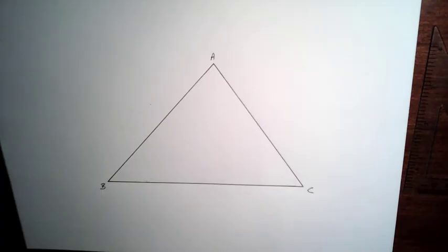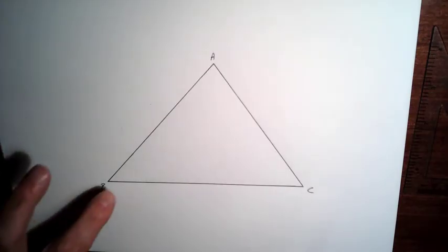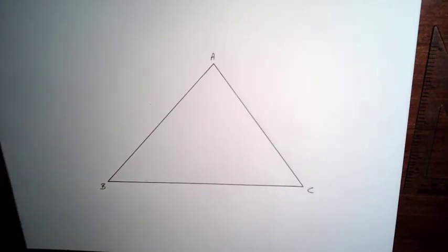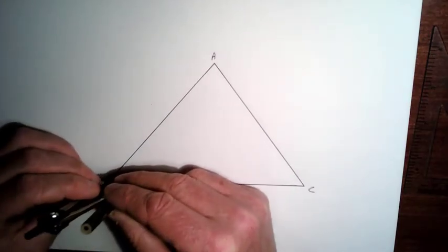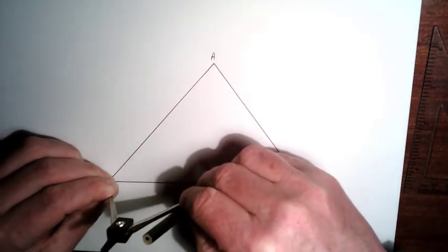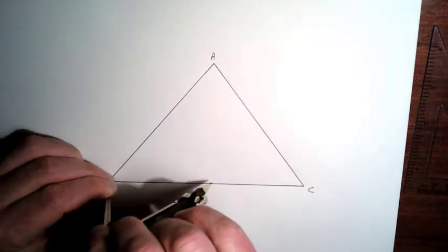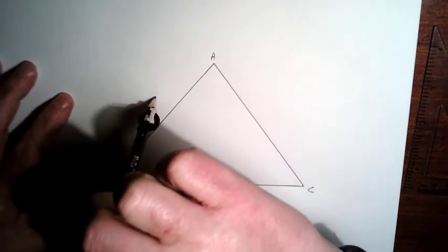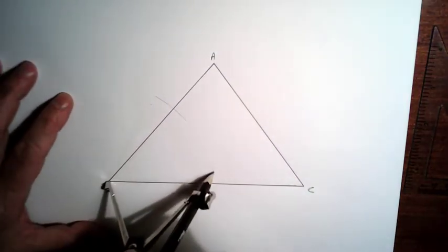What we're going to do here is construct lines that bisect two of the angles. So let's bisect this angle here at B first. So what you're going to do is take your compass, place it at B, bring your pencil out here, and draw two arcs. So let's draw one there and here.